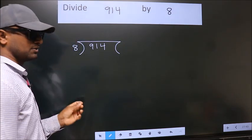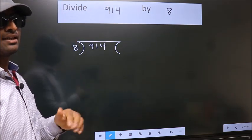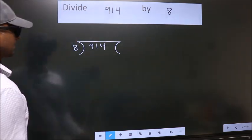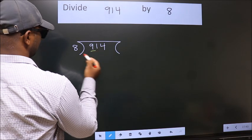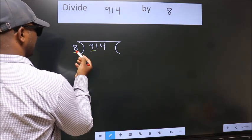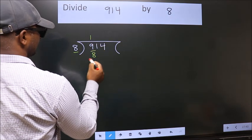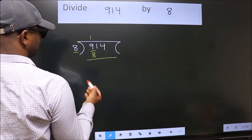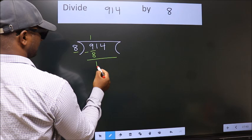This is your step 1. Next. Here we have 9, here 8. A number close to 9 in 8 table is 8 once 8. Now, we should subtract. We get 1.